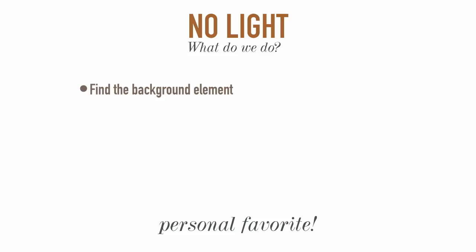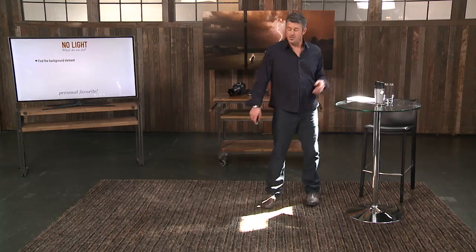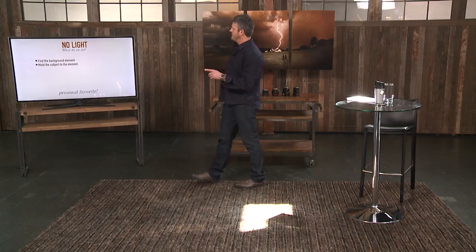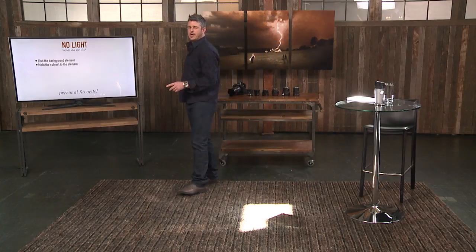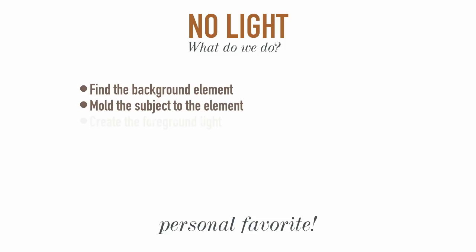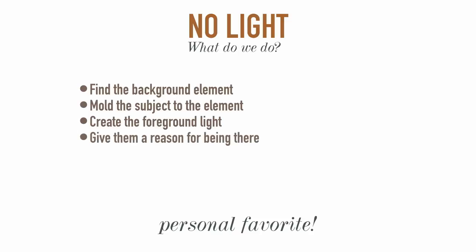So if you have no light, what do you do? You find a background element that's interesting — could be this wall — but there's no good quality light filling your subject. You mold your subject to the element, how you want them against that element. You create a foreground light — would be a video light. Could be one light, and you could do rim light from behind if you want. You give them a reason for being there again, and then click. You go for the expression. A hug, a micro movement, a micro motion pose, a squeeze — click. That's how it's done.